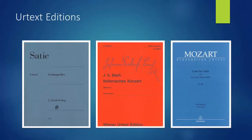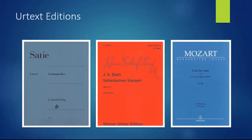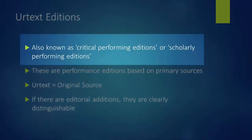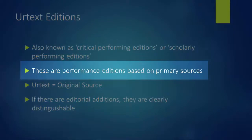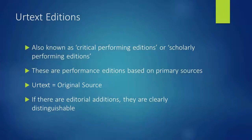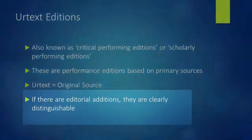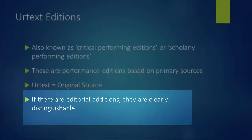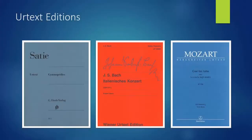In the 20th century, a number of publishers have combined scholarly work into the performing editions, creating urtext editions, or by providing performance editions based on critical editions. Urtext editions are known as critical performing editions or scholarly performing editions. They are performance editions based on primary sources. Urtext means original source. These editions provide the composer's intentions without later editorial additions, and if there are editorial additions, they are clearly distinguishable through devices such as smaller font, asterisk, color, or footnote. Major publishers of these urtext editions include Henle, Vienna Urtext, and Bärenreiter.